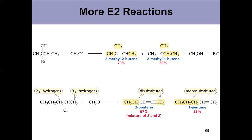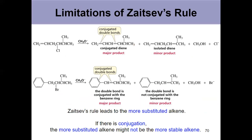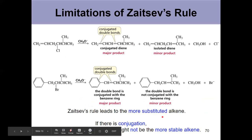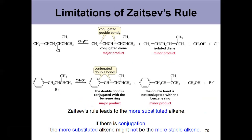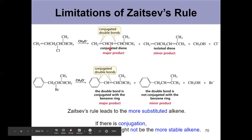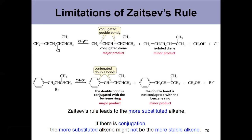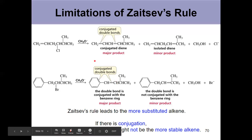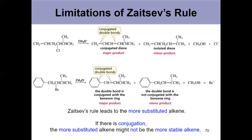There are a couple of exceptions to Zaitsev's rule — your book calls them limitations. Zaitsev will tell you to form the more substituted one, but there are things to look out for. Make sure you have a list of these exceptions in your notes. If delocalized electrons are in play, you always have to stop and check yourself. Look for dienes, look for benzene rings. If conjugation is at play, the major products here maintain a conjugated system — double bond, single bond, double bond. Those are more stable. Zaitsev would predict the one on the right, but conjugation gives you the major product in this situation. That's exception one: delocalized electrons.